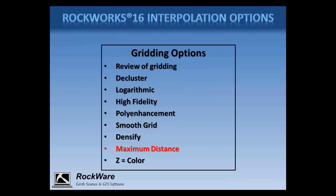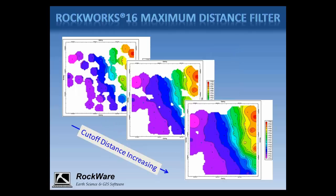The maximum distance filter option is used to define grid nodes that are beyond a user-specified distance from a control point. Values assigned to these outside nodes can be null values — showing up as white space in a contour map — or user-defined values such as zero. This option is available for both 2D gridding and 3D solid modeling. Using a very small cutoff distance results in rings of colors and contours around the original control points, as seen in the upper left-hand corner, and this changes as you increase the cutoff distance.